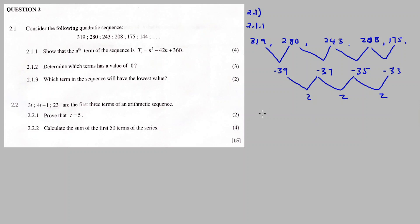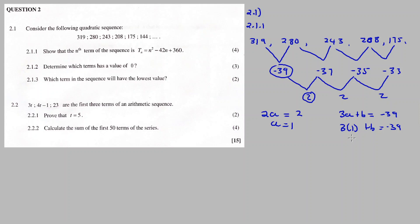So we calculate using 2A: 2A equals 2, therefore A equals 1. Then for B, we use 3A plus B equals the first difference, negative 39. Substituting: 3 times 1 plus B equals negative 39, so B equals negative 39 minus 3, which gives B equals negative 42.